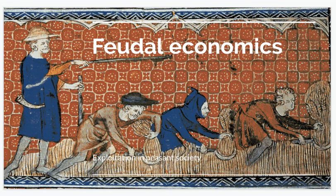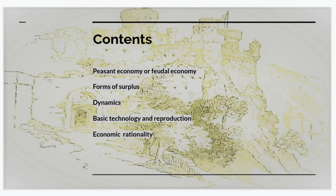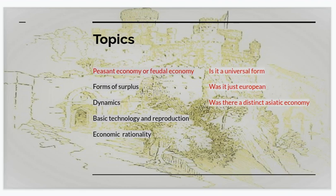I'm continuing my series of video lectures about topics that appear in my book 'How the World Works.' I'm going to touch on some of the material I cover in the chapter on peasant economies or feudal economies. As a preview, I'll be talking about whether one should talk about peasant economies or feudal economies, the forms of surplus product in these systems, their dynamical development, underlying technologies, and the level of economic rationality that feudal or peasant economies have. The first topic is whether it's a peasant or a feudal economy — is this a universal economic form, or was it just something in Europe, and was there a distinct Asiatic economy?